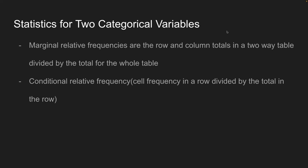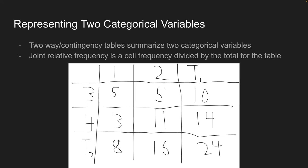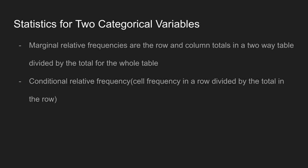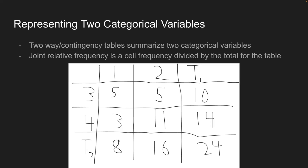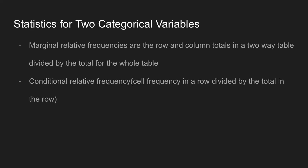The marginal relative frequency is the row and column totals in a two-way table divided by the table total. For example, the marginal relative frequency for row 3 would be 10 divided by 24. The conditional relative frequency is the cell frequency in a row divided by the row total, or divided by the column total.